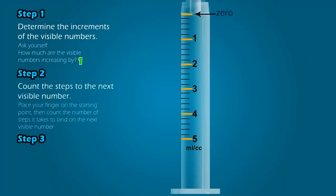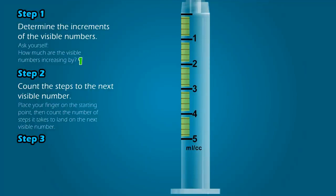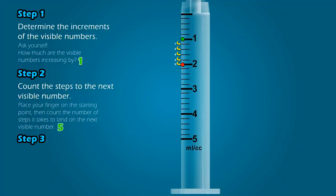Step 2: Count the steps to the next visible number. Notice that you have long lines which have the visible numbers next to them, and short lines which do not. To determine the values of those shorter lines, we count how many lines it takes to get from one visible number to the next. Using the line of the first visible number, one, as your starting point, count how many steps it takes to land on the next visible number. It takes five steps to get to the next visible number. We did not include the starting point as one of the steps — we only counted the lines after the starting point and stopped once we landed on the next visible number. So the answer to step two is five.